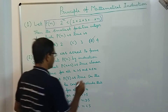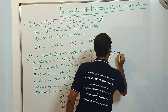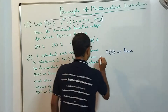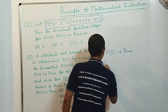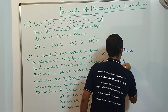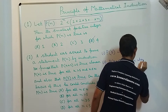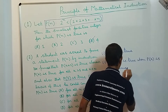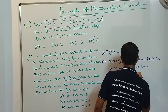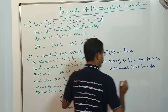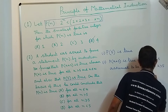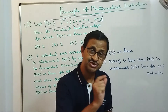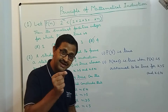So we see that P(5) is true — that is the first condition. And the second condition is that P(k+1) is true when P(k) is assumed to be true, for k ≥ 5 and k ∈ ℕ. According to the principle of mathematical induction, we can say that P(n) is true for all n ≥ 5.